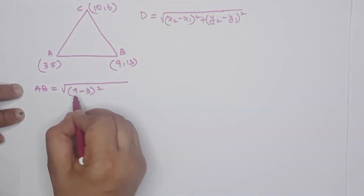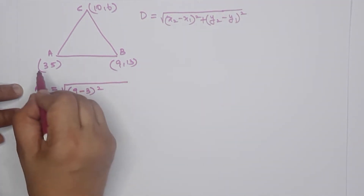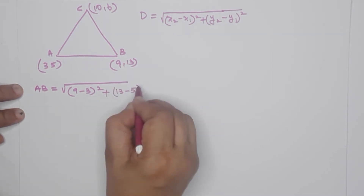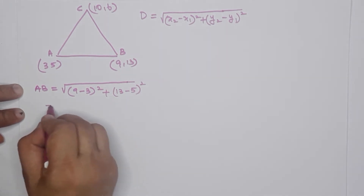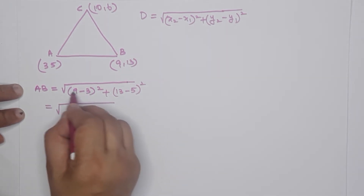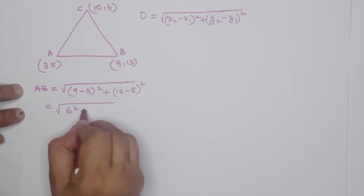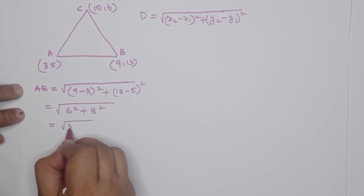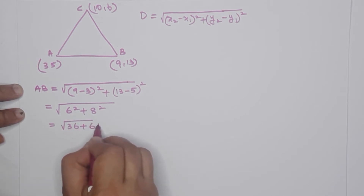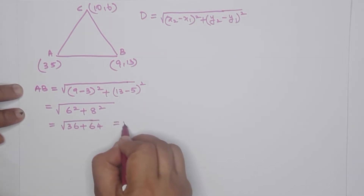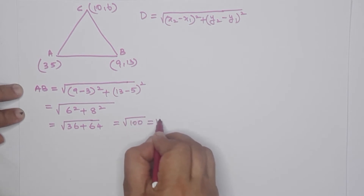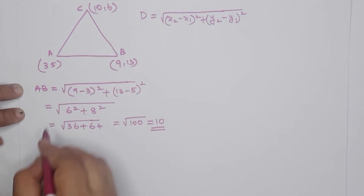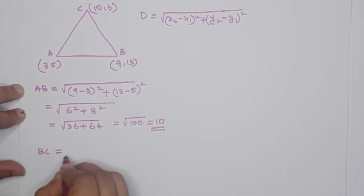This is the distance formula. AB = √[(9−3)² + (13−5)²] = √[6² + 8²] = √[36 + 64] = √100 = 10. So AB equals 10. Now we check distances BC and AC.